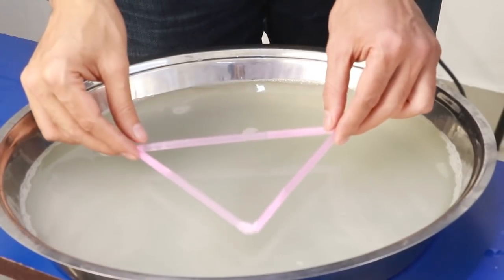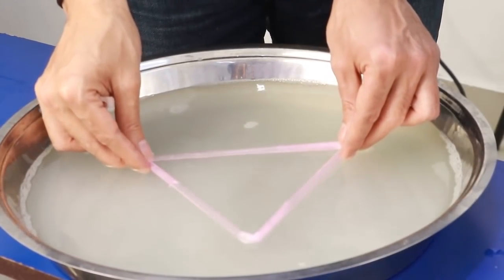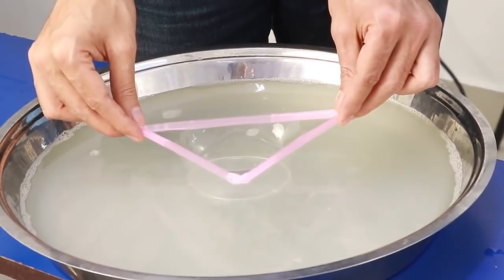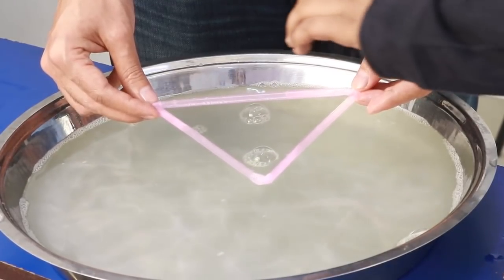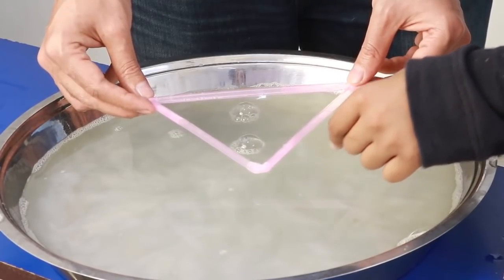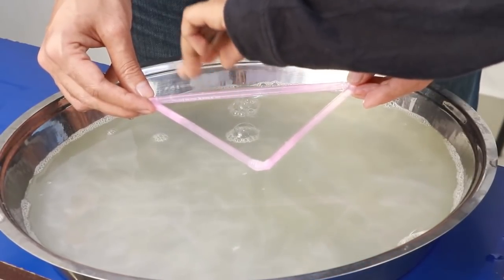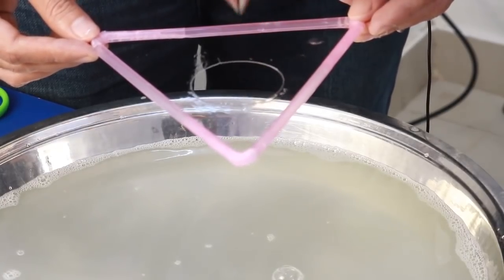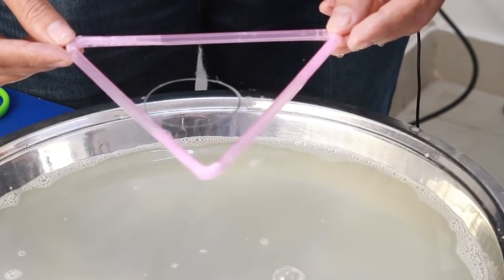Now we are going to make the film with the help of the triangular frame. We have this film right here. I am going to put the thread in the film, and then I am going to pop it with the help of some paper. And it formed a complete circle.